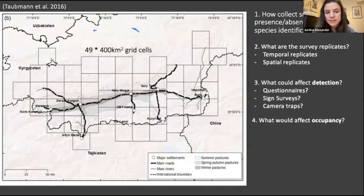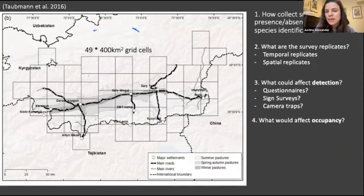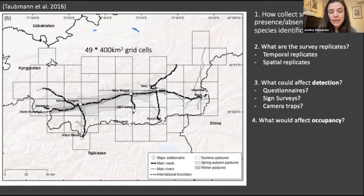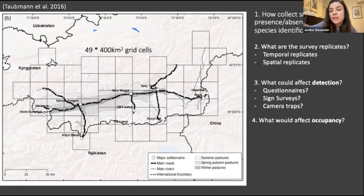Rob highlights human disturbance — mining, herding of livestock, and settlements are all possibilities for occupancy covariates. Chloe suggests density of prey, which is very important for carnivores. However, it's hard to get reliable prey estimates unless you collect that data yourself during the survey. If you plan to look at prey, plan for it — you could do an occupancy survey for prey simultaneously and use that as your covariate or look at species interactions.